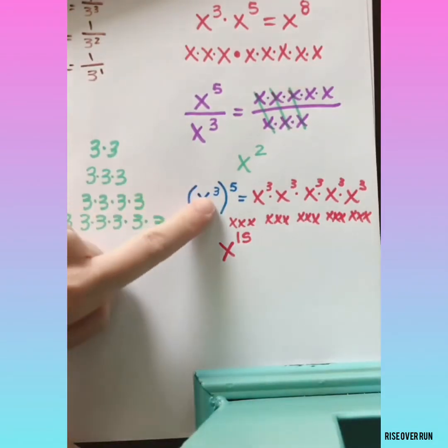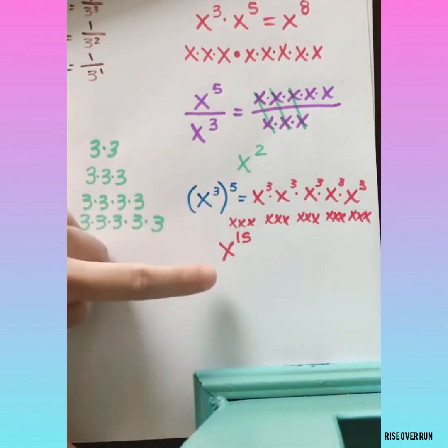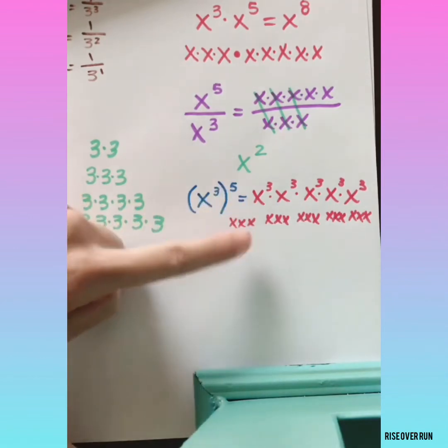Notice the shortcut here. If you have a power raised to a power, you can multiply those two powers. Keep the base. 3 times 5 is 15.